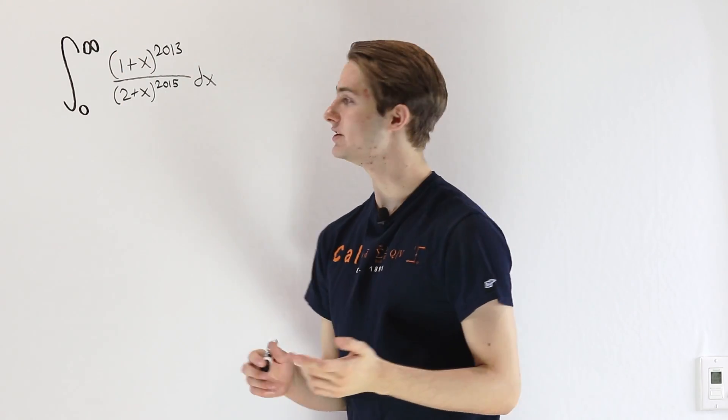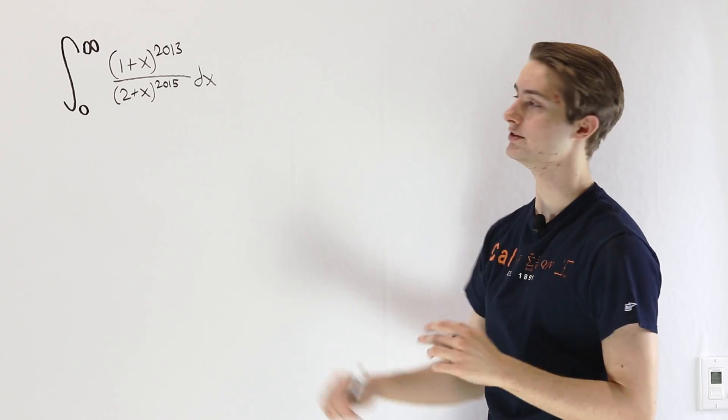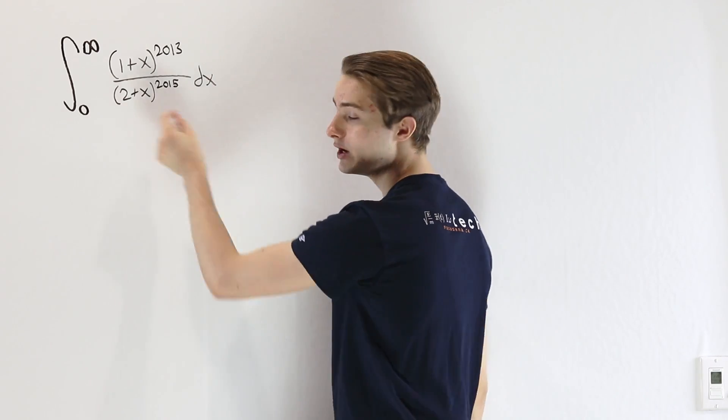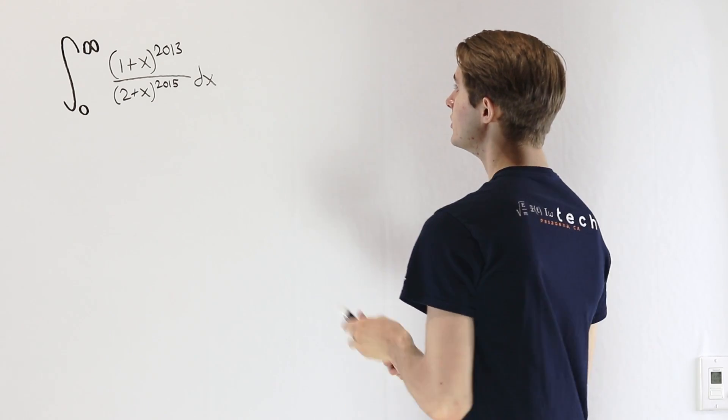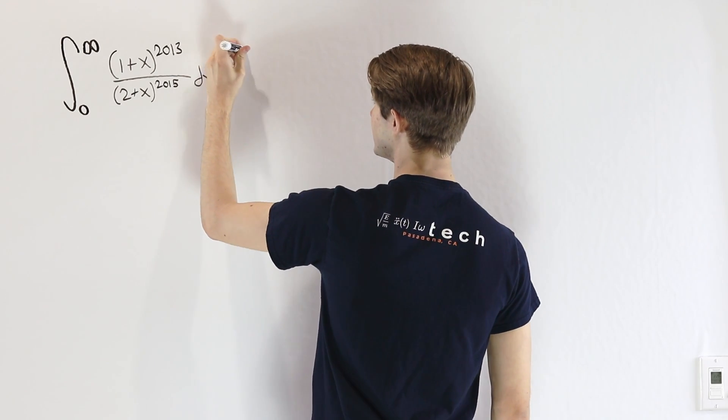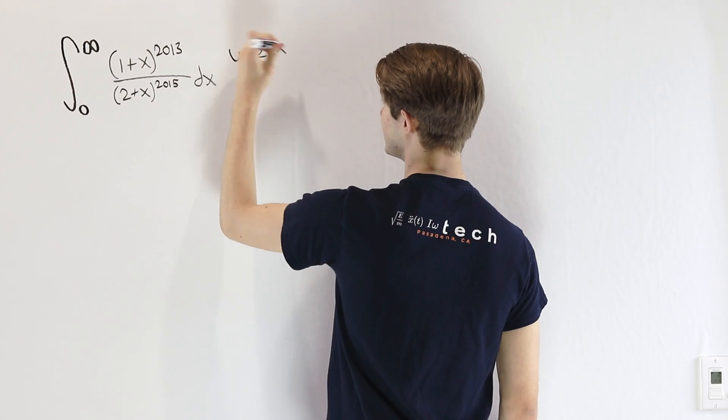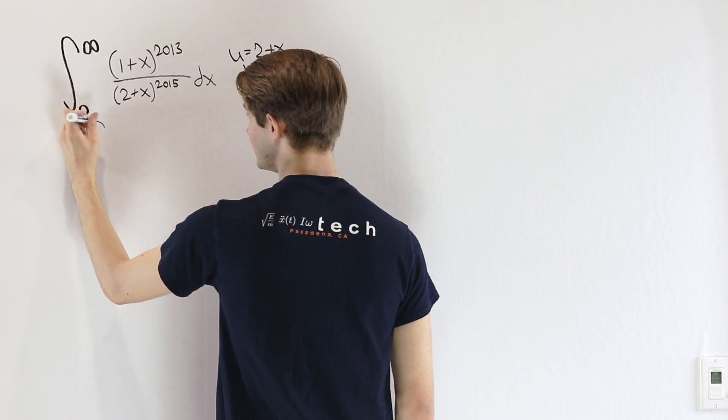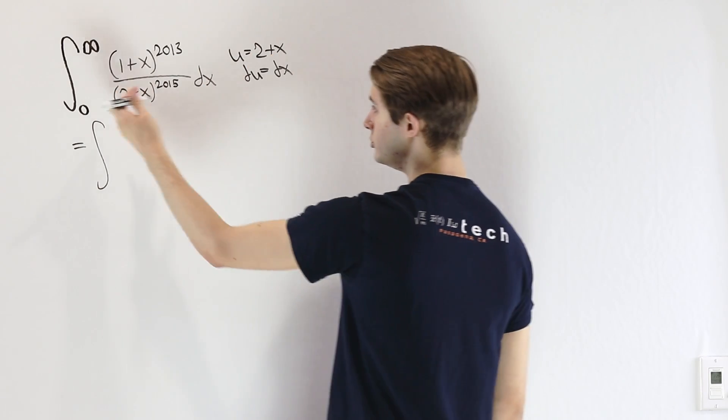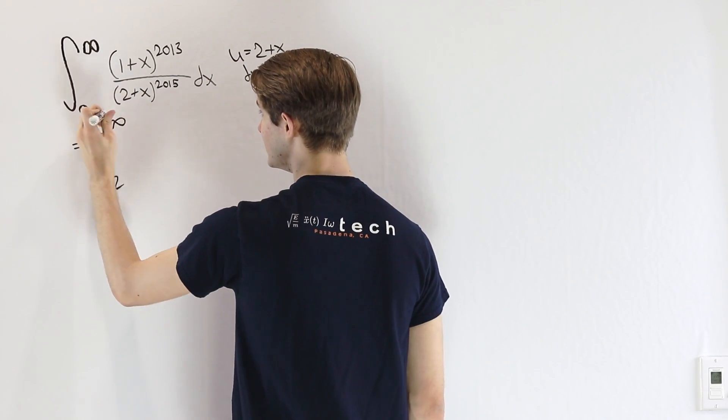It's usually easier, especially when we're looking at giant powers like 2015, if we just have one variable on the inside, like u^2015. So let's start out by substituting u equals 2+x. In that case, we'll have du equals dx, and then we can rewrite this as the integral from 2 to infinity.